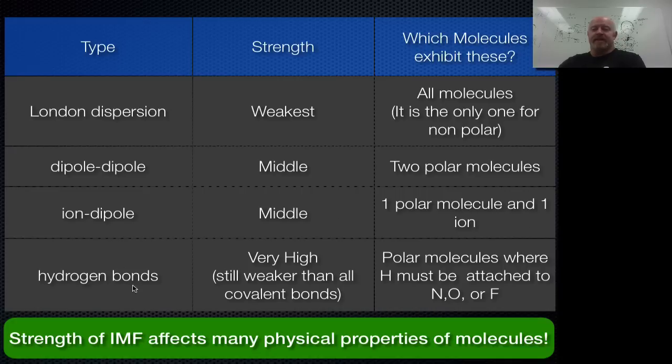Hydrogen bonding is kind of the big deal here. It's the strongest, very high. Keep in mind, it's still weaker than all covalent bonds and only works with polar molecules where hydrogen is attached to nitrogen, oxygen, or fluorine. So if that's the case, then you can generate your hydrogen bonds.